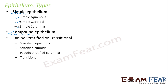Compound epithelium can be stratified or transitional. We will dedicate a slide for each type of epithelium. They can be subdivided as stratified squamous, stratified cuboidal, pseudostratified columnar, and transitional epithelium. So these are some of the types of epithelium.